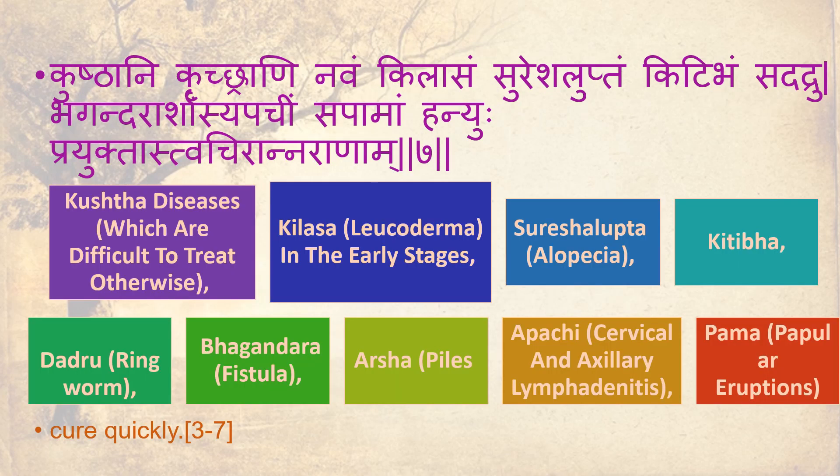Kushtani Khrichrani, Navam Kilasam Suresh, Luptham, Kidibam, Sadadru, Bagandara, Arshatsya, Abajim, Sabamam, Hanjyuhu Prayukta — Kushtra diseases difficult to treat otherwise, Kilasa, Lucodomani early stage, Suresh, Lupth alopecia, Kidibam, Dadru ringworm, Bagandara fistula, Arshab piles, Abajim cervical and axillary lymphadenitis, Parma papular eruption — all of these are cured.